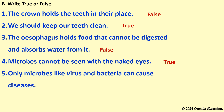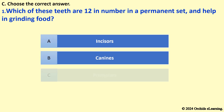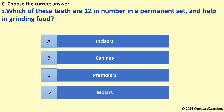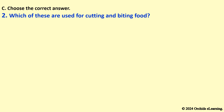Choose the correct answer. Which of these teeth are 12 in number in a permanent set and help in grinding food? The answer is D — Molars. Which of these are used for cutting and biting food? The answer is A — Incisors.